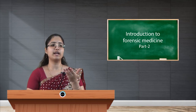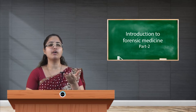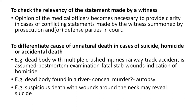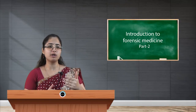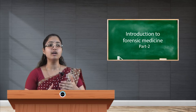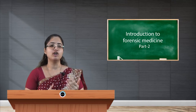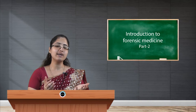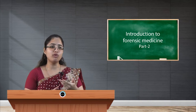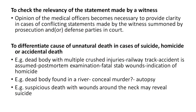For example, a dead body with multiple crushed injuries found on a railway track presents prima facie evidence — evidence presumed to be true unless proven otherwise — suggesting an accident. However, if a post-mortem examination or autopsy reveals fatal stab wounds on the body, that indicates homicide. This would be a case of homicide made to look like an accident, and forensic medicine is essential to prove this.